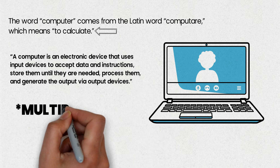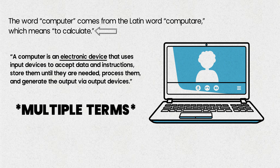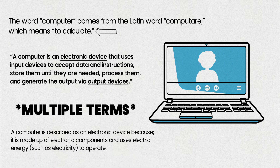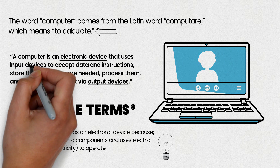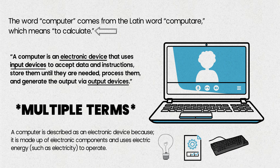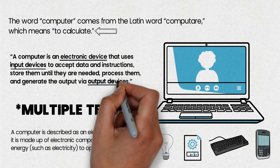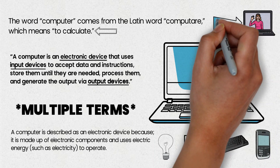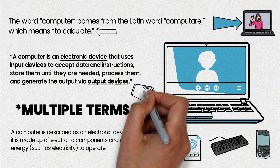We have used multiple terms in the definition of computer — for example, electronic device, and input and output device. A computer is described as an electronic device because it is made up of electronic components and uses electric energy such as electricity to operate. Input devices are used to collect or accept data, and input can take many forms ranging from keyboard commands to data from another computer or device. The output is the outcome of the transformation process, or the result of the processing — displayed on the monitor, or heard through speakers.